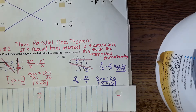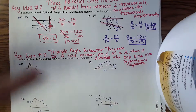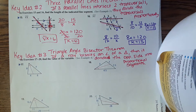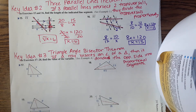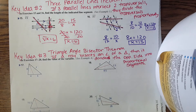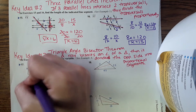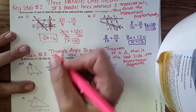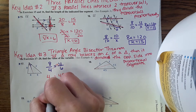Key idea number three is the Triangle Angle Bisector Theorem: if a ray bisects an angle of a triangle, then it divides the opposite side into proportional segments. Pause to write this down. In the example shown, the angle bisector creates equal angle measures on both sides, and we set up the proportion 8 over 4 equals y over 6. Cross multiply: 4y equals 48, so y equals 12.